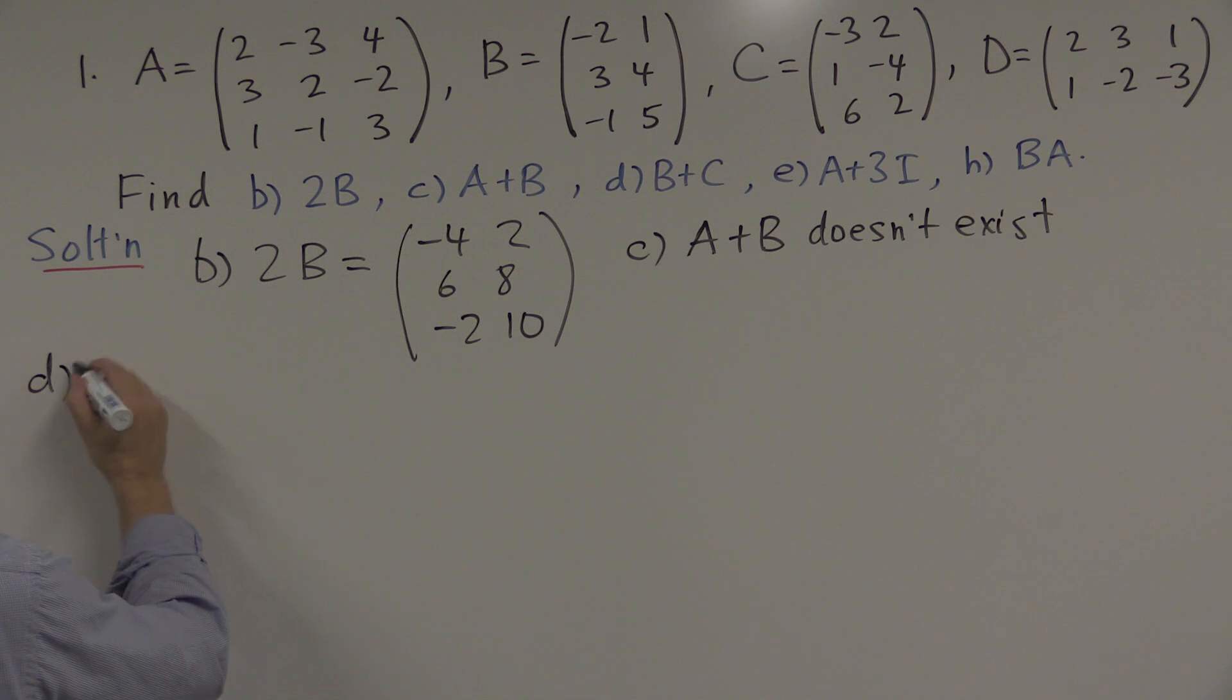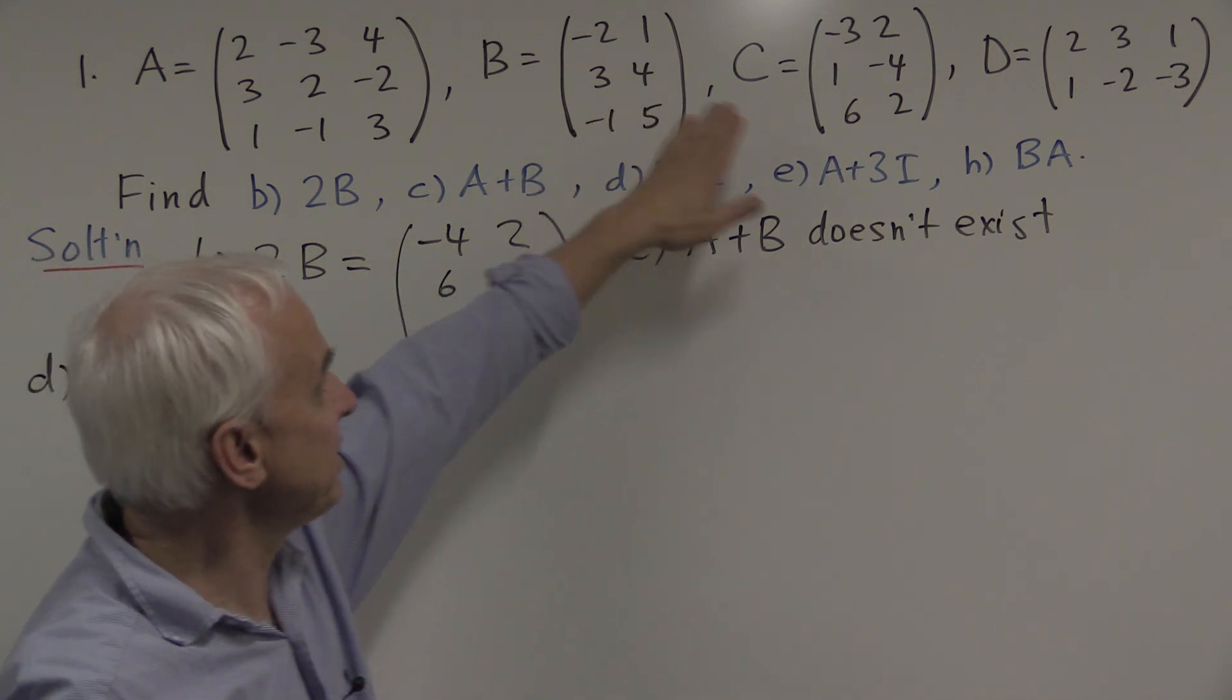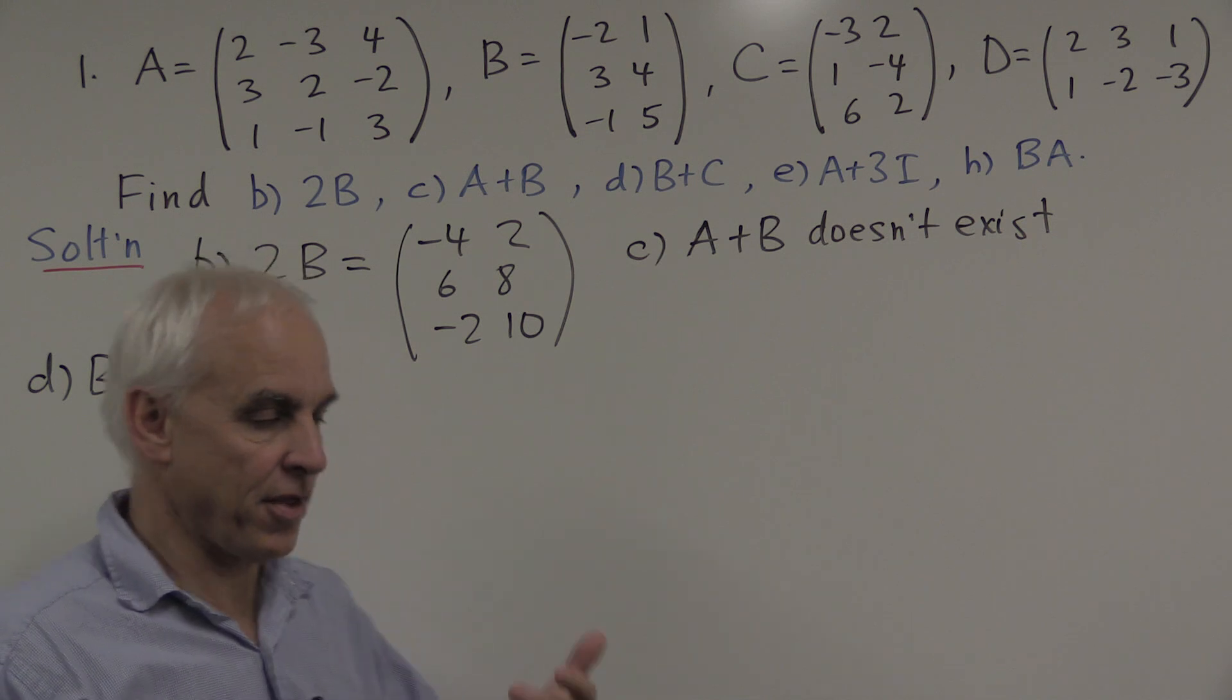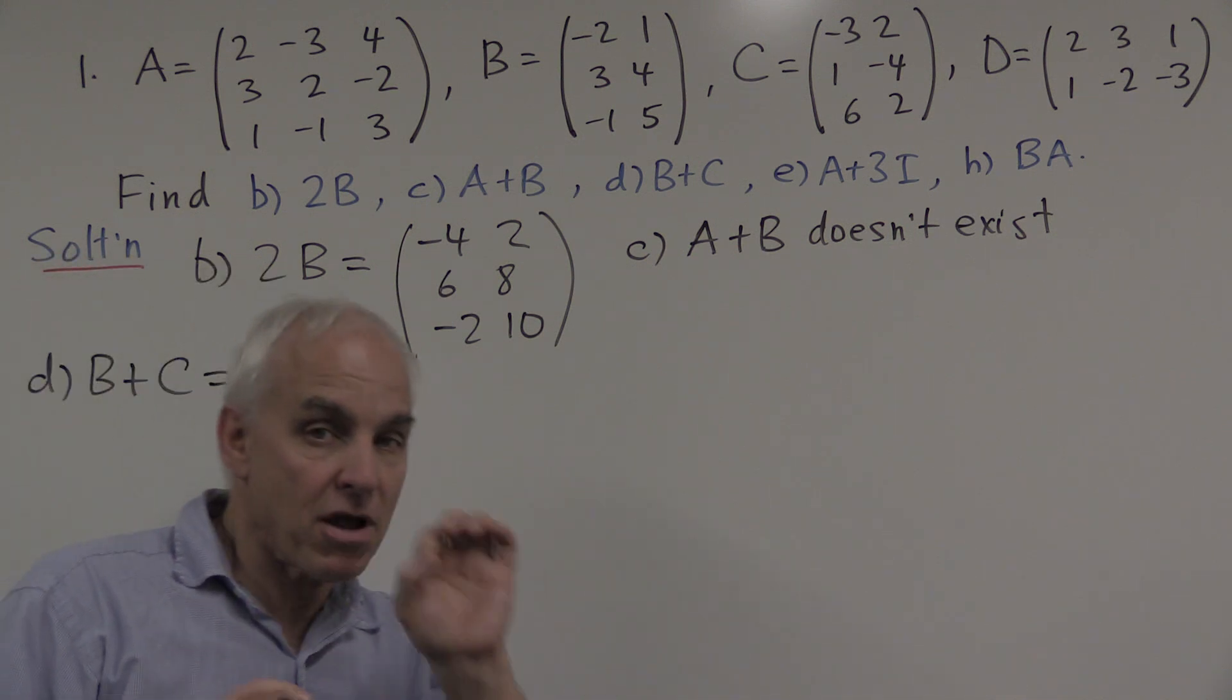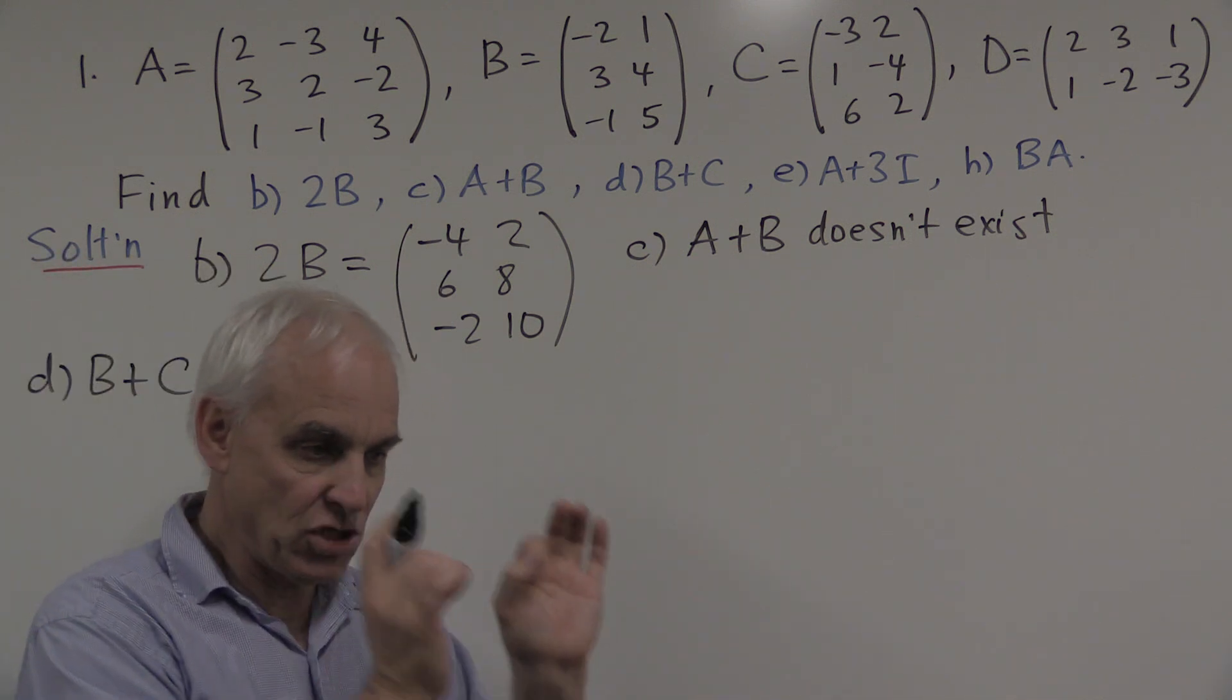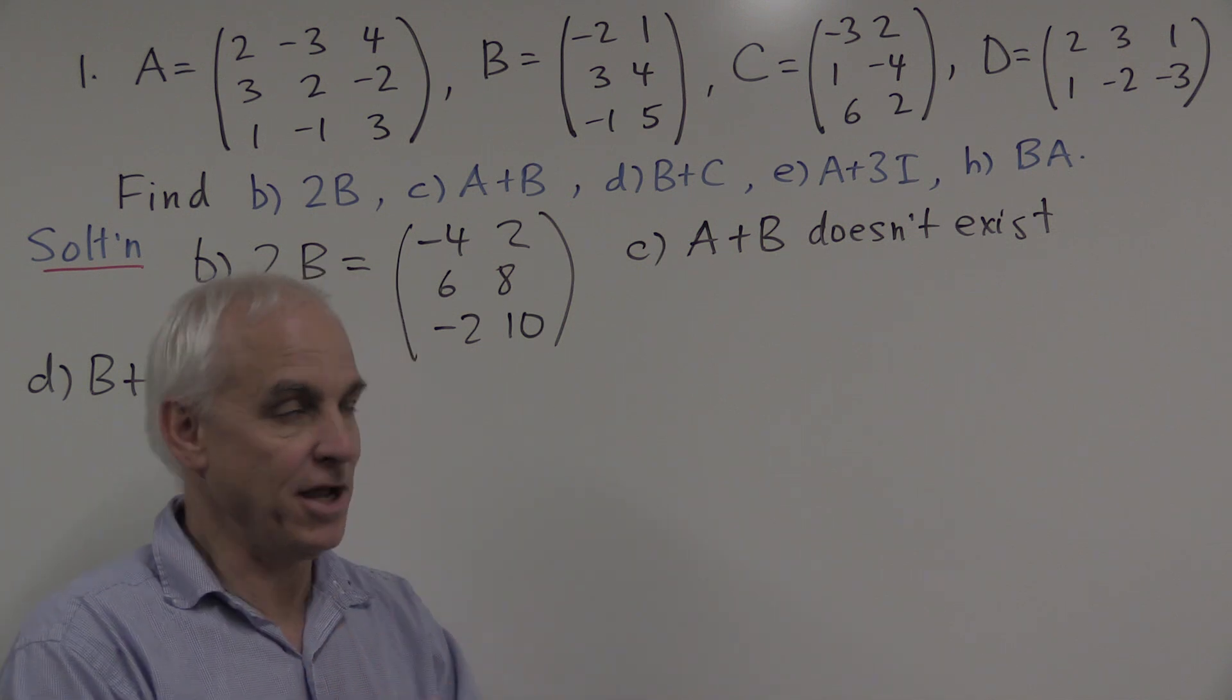How about B plus C? Well, B and C are the same sizes. They're both three by two matrices. So we can just add them in the regular way. And that means we just add them component wise. So each corresponding components are added together.